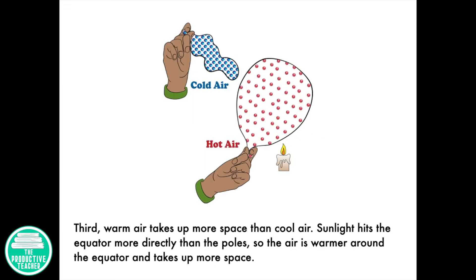Third, warm air takes up more space than cool air. Sunlight hits the equator more directly than the poles, so the air is warmer around the equator and takes up more space.